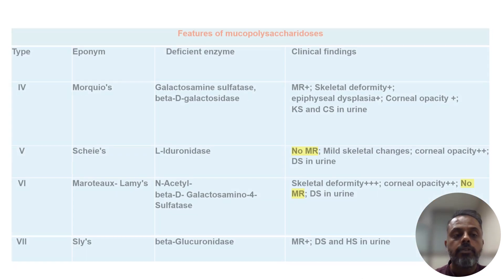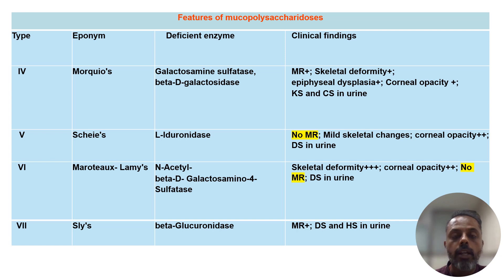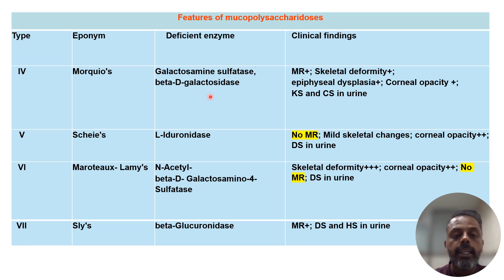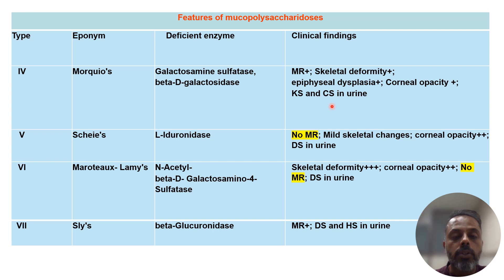Type 4 mucopolysaccharidosis is Morquio's syndrome. The enzyme deficient in Morquio's syndrome is galactosamine sulfatase or beta-D-galactosidase. This syndrome is associated with mental retardation, skeletal deformity, corneal opacity, and excretion of keratan sulfate and chondroitin sulfate in the urine.